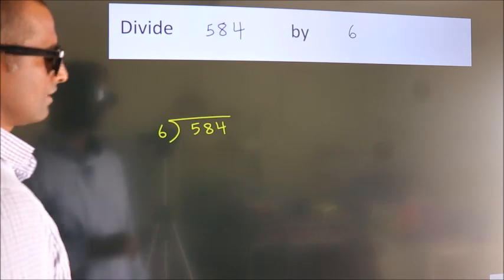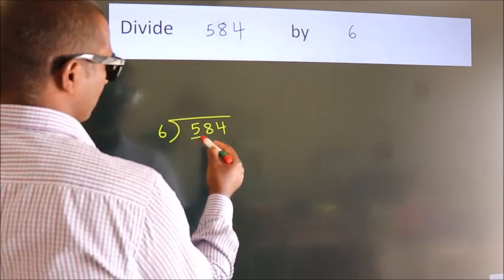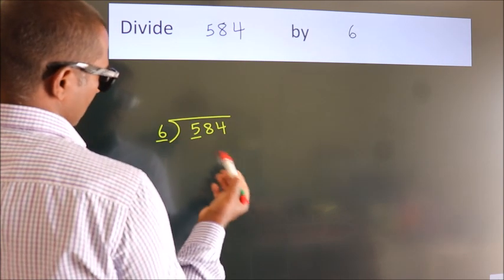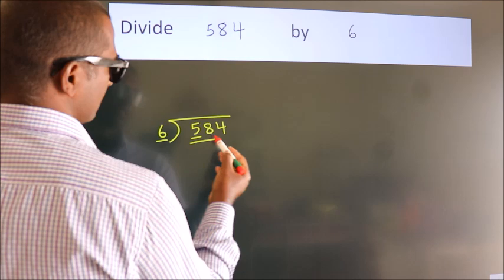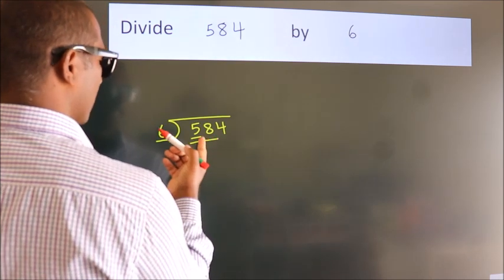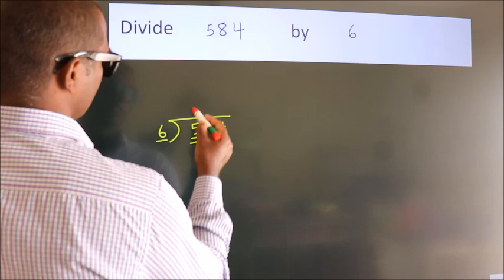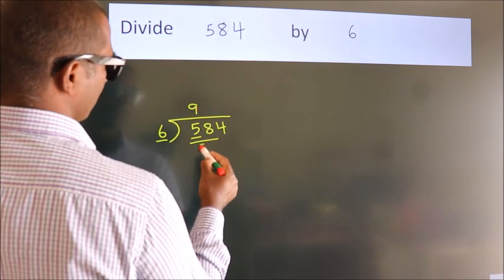Next. Here we have 5, here 6. 5 is smaller than 6, so we should take two numbers: 58. A number close to 58 in the sixth table is 6 nines, 54.